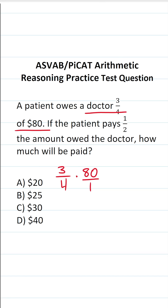More specifically, I can say four goes into four one time, and four goes into 80 twenty times. This becomes three over one, which is just three times 20 over one. Three times 20 is going to be 60, so the patient owes the doctor $60.